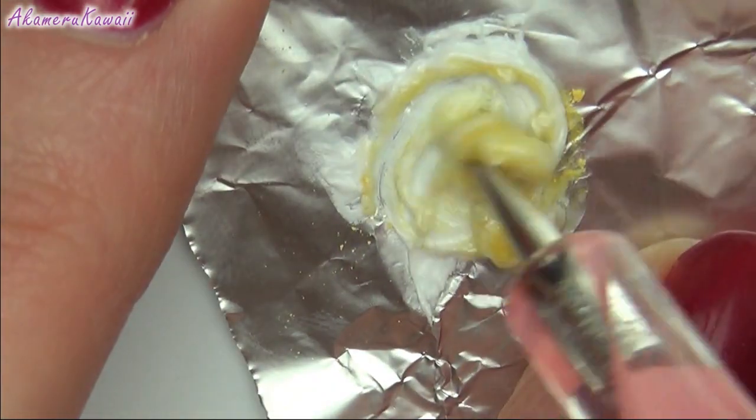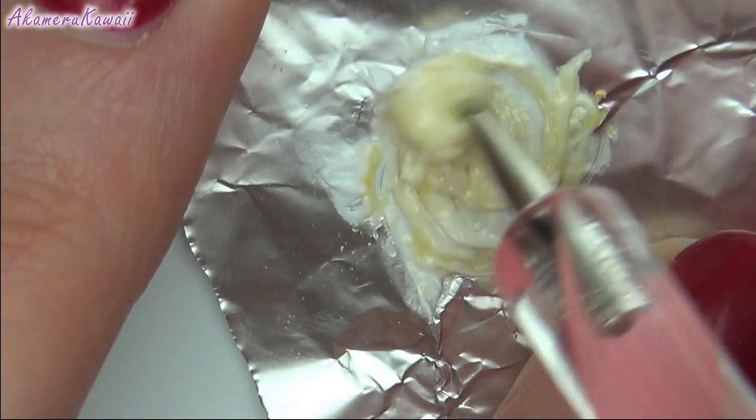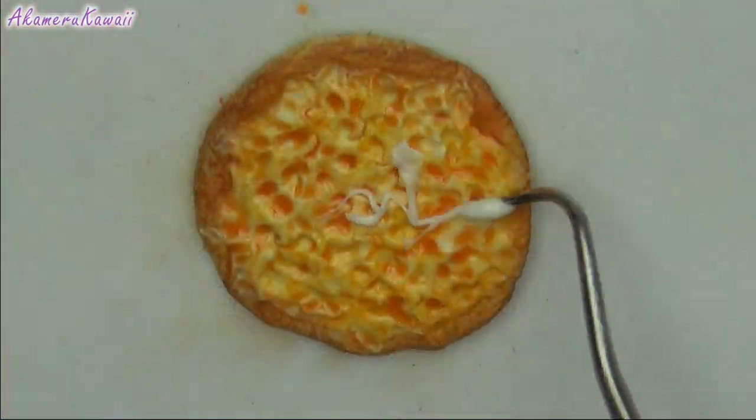Mix solid and liquid clay with a little yellow pastels for extra cheese. Adding this second layer gives it more dimension.